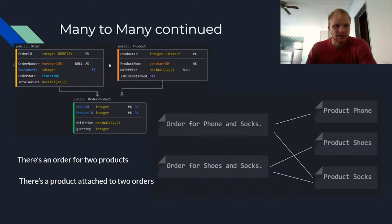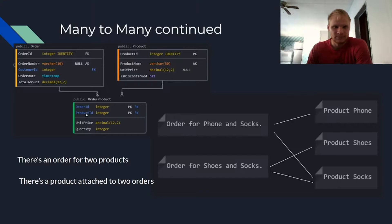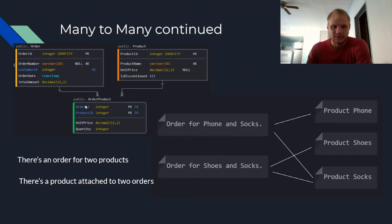So let's see how this works. Here we have an order for phone and socks. This order has two products: product phone with an ID of one, and product socks with an ID of three. In the order-product table it would be order ID one, product ID one for the phone — those are connected. And for socks it would be product ID three, order ID one. For another order — an order for shoes and socks — shoes would be product ID two, so product ID two with order ID two, and socks would be product ID three with order ID two. That's how they get connected up.